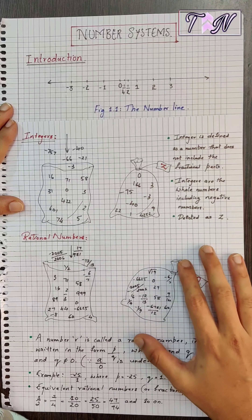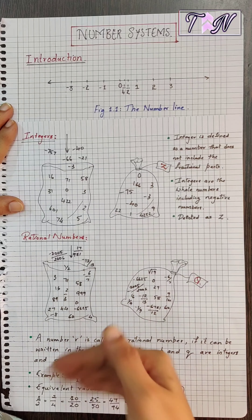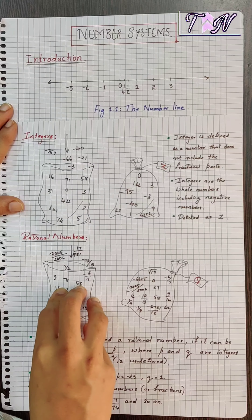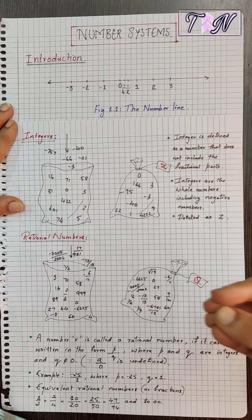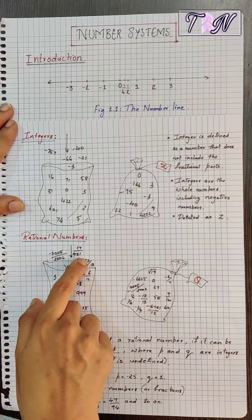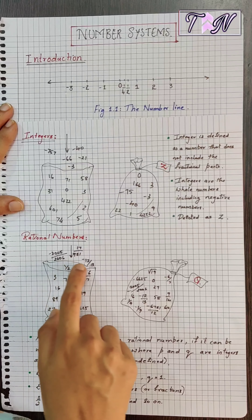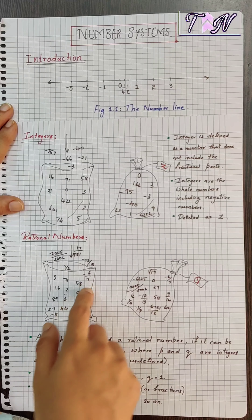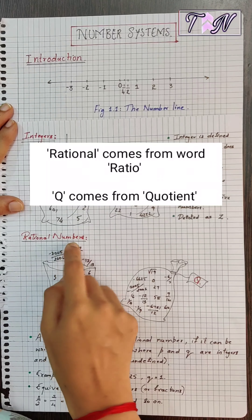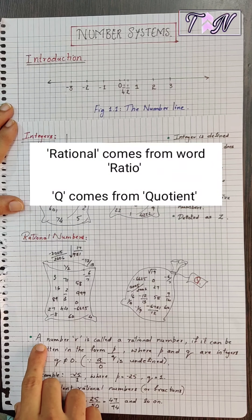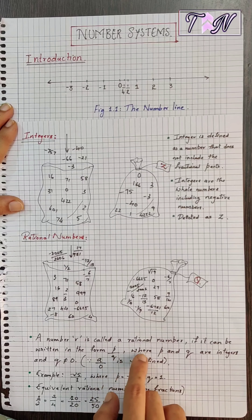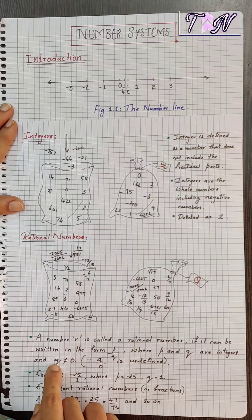Now let us look at the next type of collection. In the bag we currently have whole numbers and negative numbers — that is, a collection of integers. But on the number line there are some more numbers remaining. These numbers are of the form: 1/2, 17/981, −2005/2006, −12/13, −6/7. We put all these numbers into the same bag and this new collection is denoted as Q and called rational numbers. A number r is called a rational number if it can be written in the form p/q where p and q are integers and q is not equal to 0.